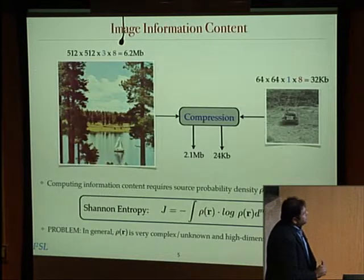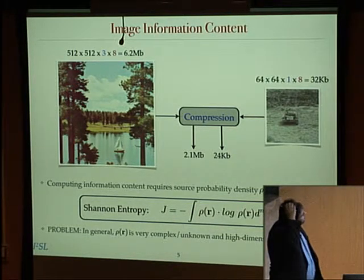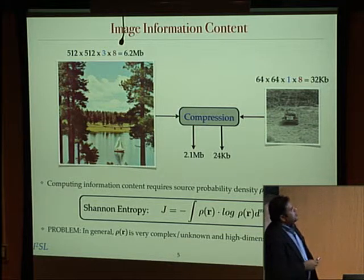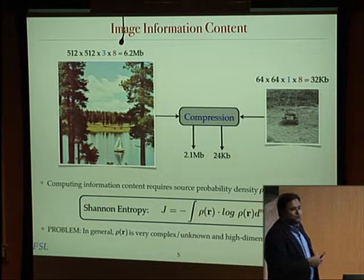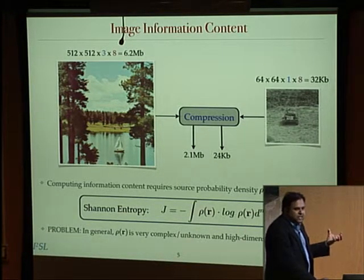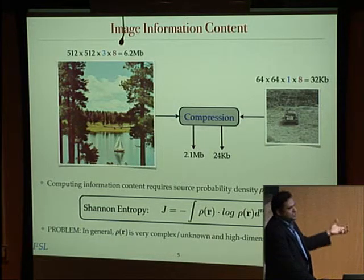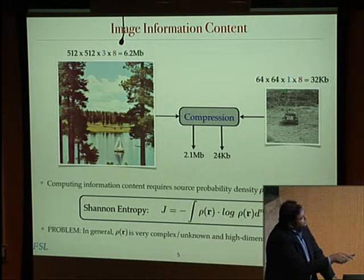Let me briefly introduce what we might imagine as information content. If I give you this image and ask how much information might be present, one naive answer could be: count the number of bits needed to store this file. In this case, it's a 512 by 512 image with three color planes and 8 bits per color plane, giving you 6.2 megabytes. You might say that's the amount of information needed to describe this image. But one might argue that is not actually the true answer.